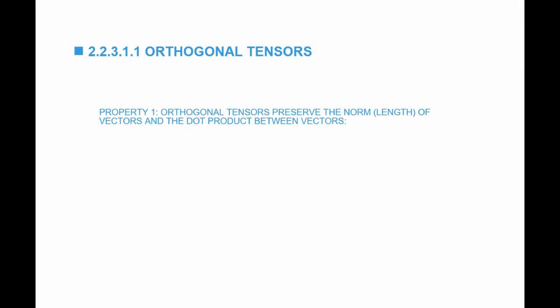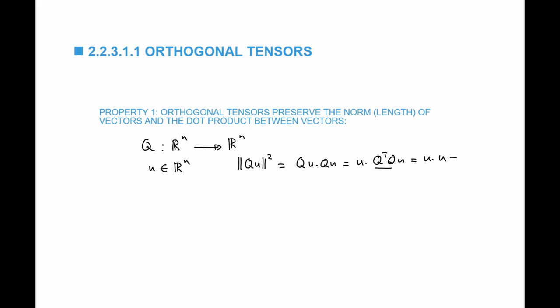The first property of orthogonal tensors is that when I multiply a vector by an orthogonal tensor, the resulting norm is the same as the norm of the original vector. For an orthogonal matrix Q from R^n to R^n and a vector u, the norm of Q u squared equals Q u dot Q u, which equals u dot Q transpose Q u. Since Q transpose Q equals I, this equals u dot u, which is the norm of u squared. So the length of the vector does not change when multiplied by an orthogonal tensor.